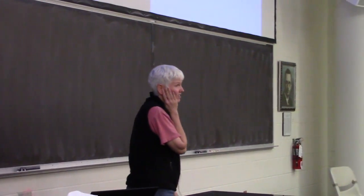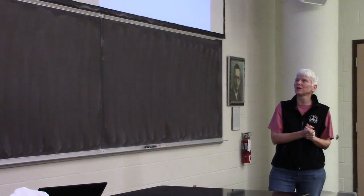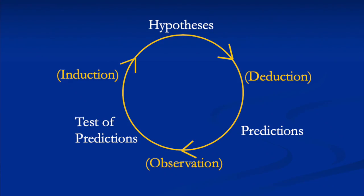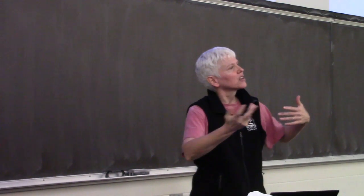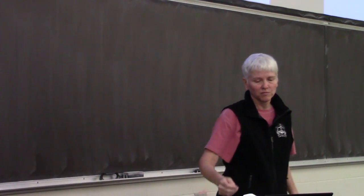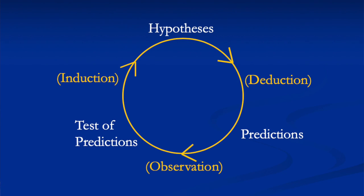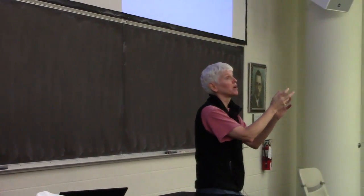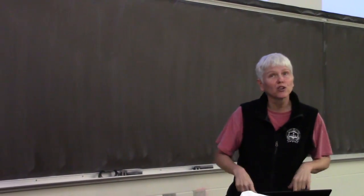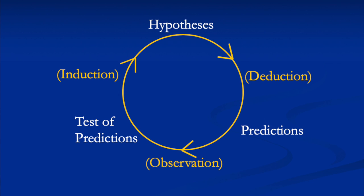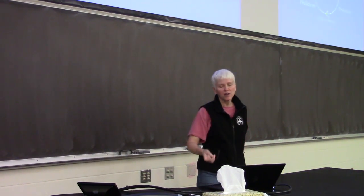The scientific method works like this: start with hypotheses — statements about reality you're trying to determine are true or false. From hypotheses you deduce predictions using the deductive method. Then you go out and observe the real world, use your data to test those predictions, and then revise your hypotheses through induction from your observations.